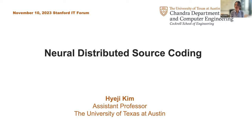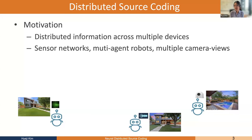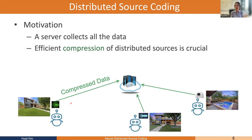So let's get to the motivation — why are we talking about this? There are increasingly many scenarios where we have distributed information across multiple devices. Examples include sensor networks: LiDAR sensors, audio sensors, cameras, or multi-agent robots wandering around with multiple distributed camera views. In these scenarios, we have a server or data center collecting all the data, and efficient compression of that distributed data is crucial.